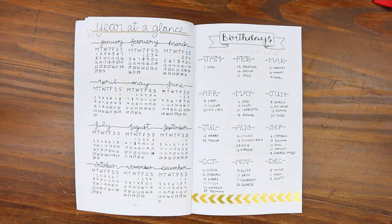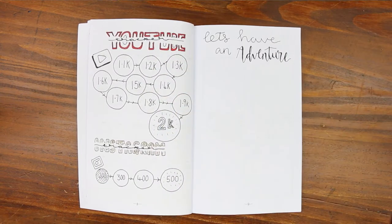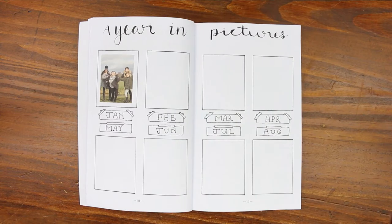This is kind of my setup and I've got my year at a glance on one page and birthdays on the other page. I've got a couple of trackers and a let's have an adventure page where I'm planning to fill in everywhere that we go.